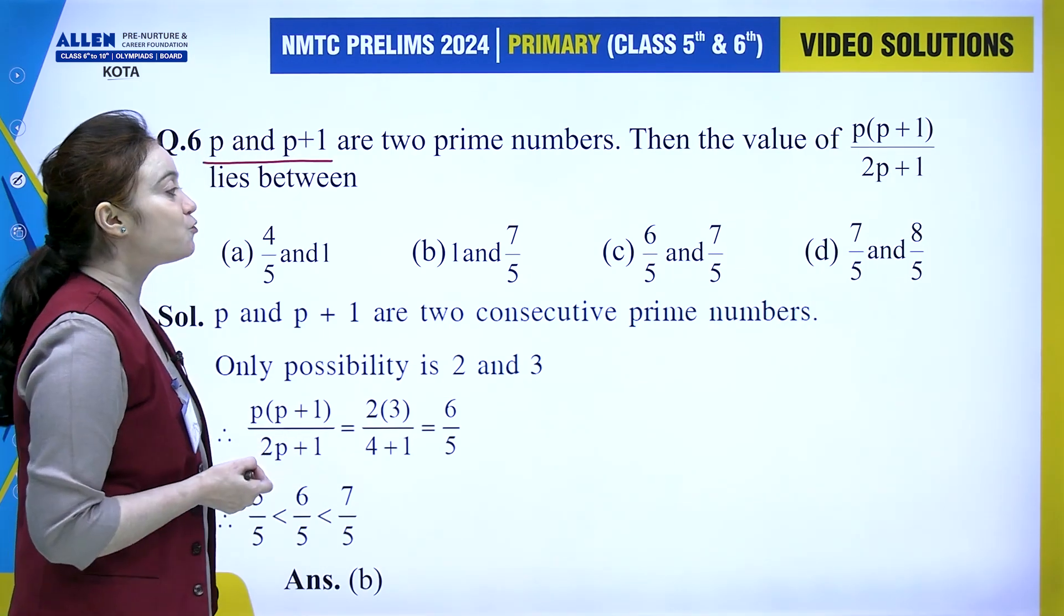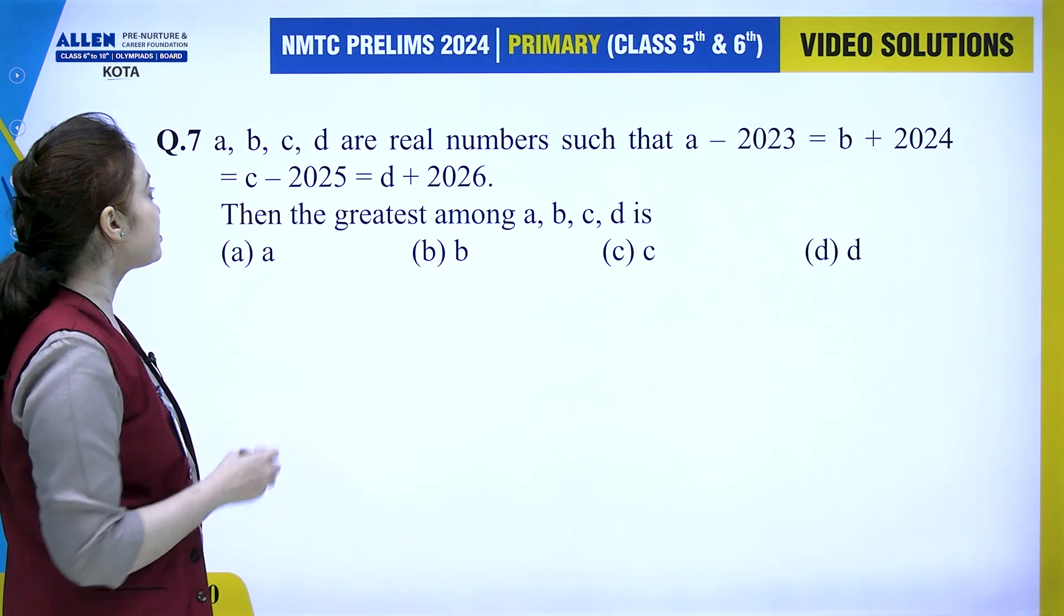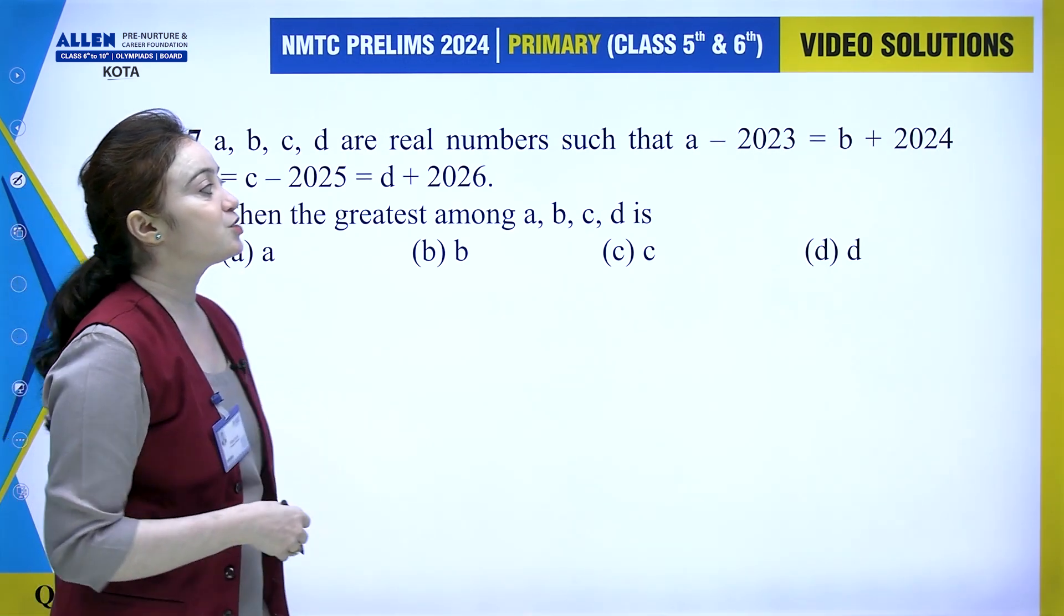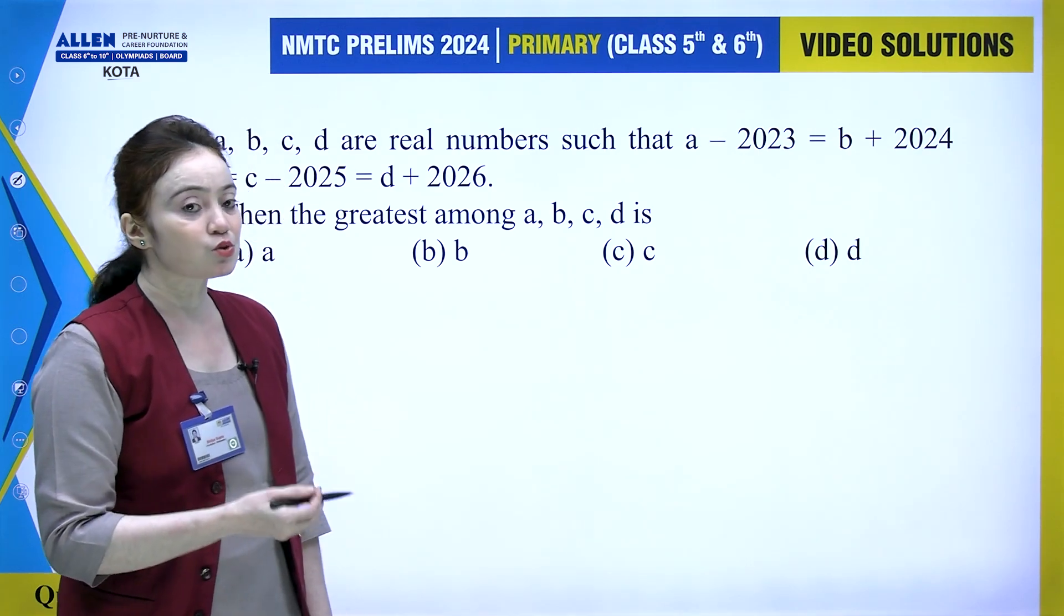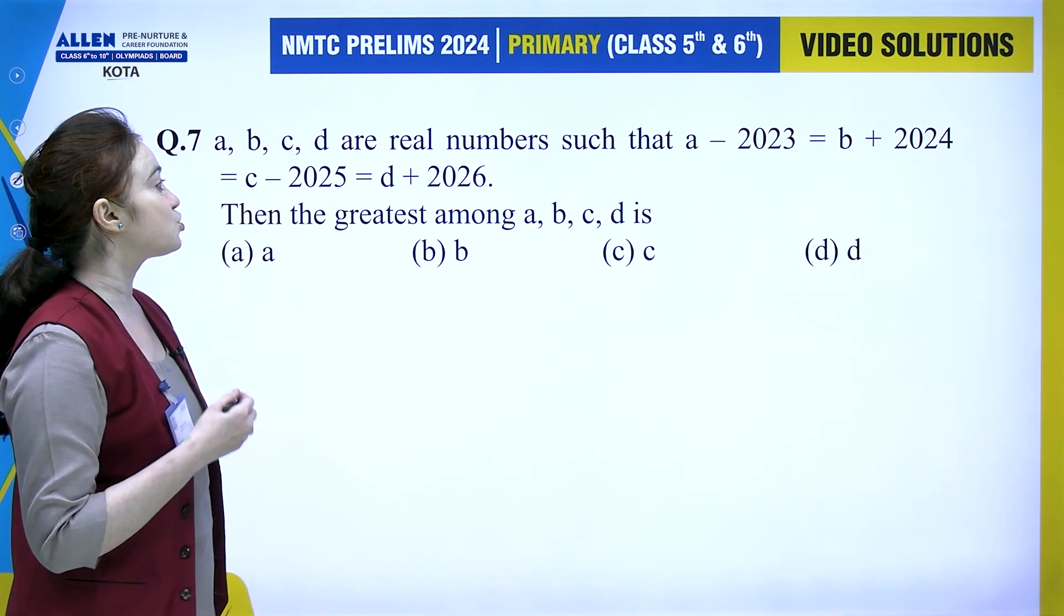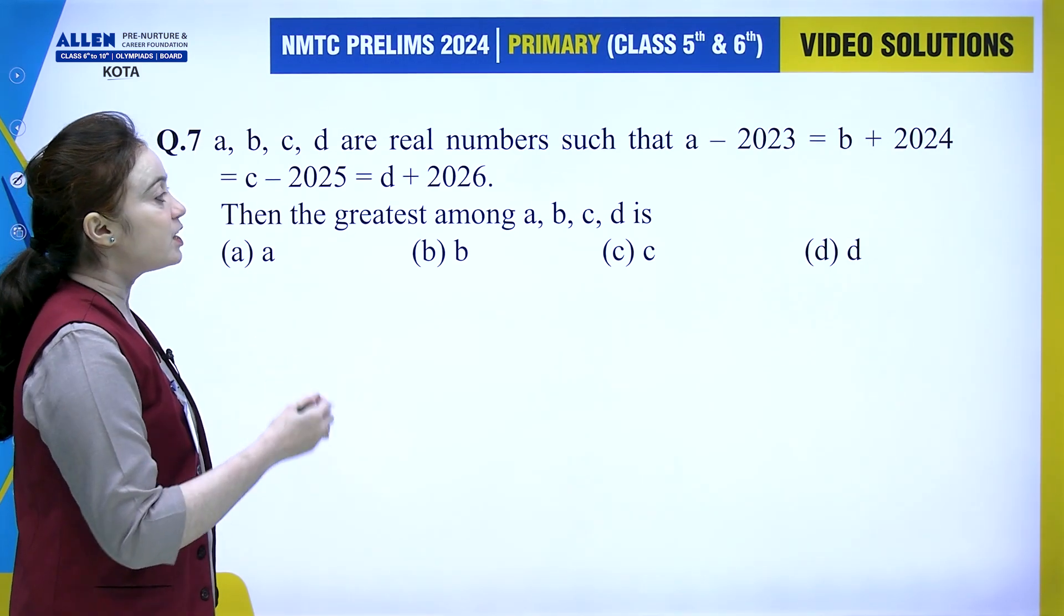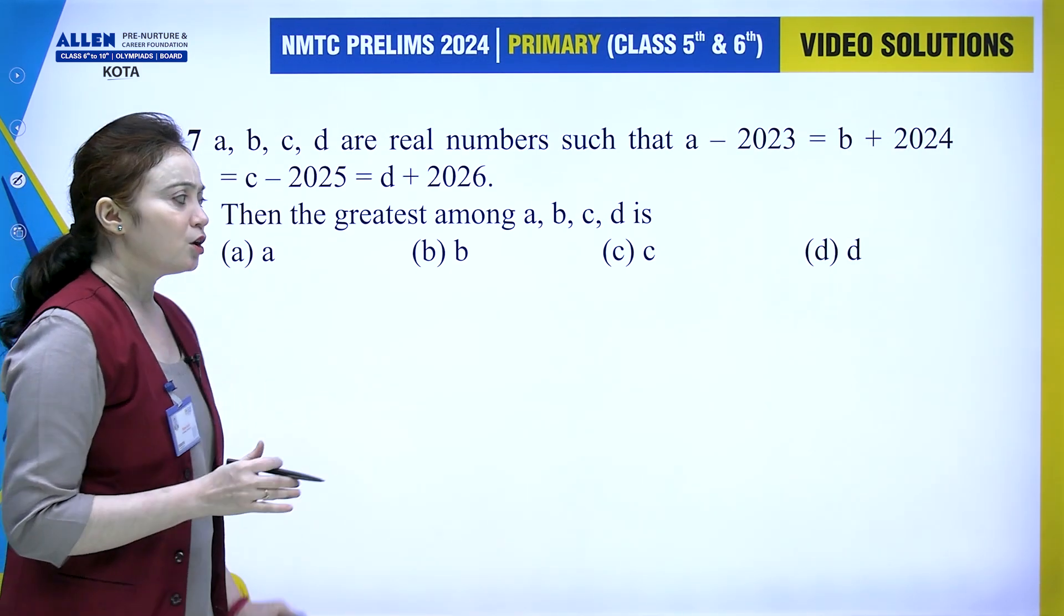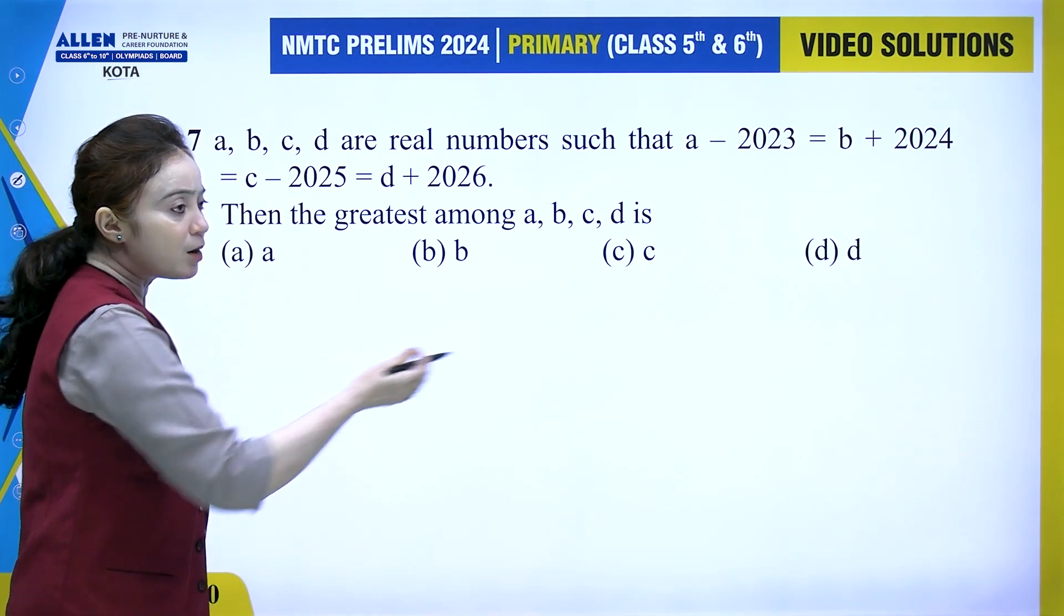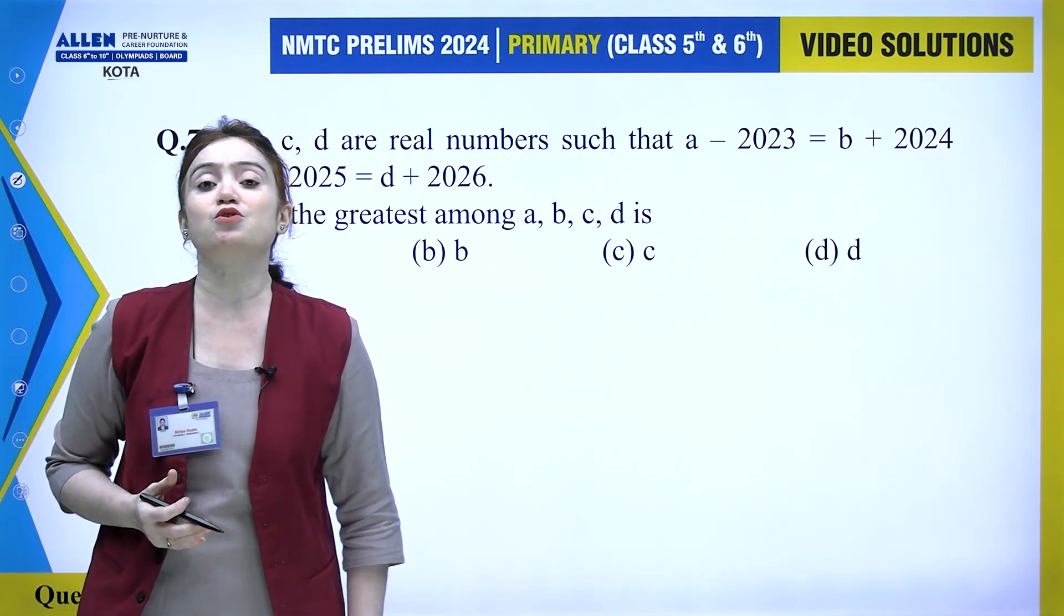Let's move to the next problem. Question number 7: a, b, c, d are real numbers such that a minus 2023 equals b plus 2024 equals c minus 2025 and equals d plus 2026. The question asks which is the greatest among all these four numbers.